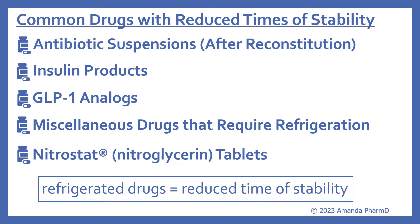Now we're going to look at some common drugs with reduced times of stability. This includes antibiotic suspensions after reconstitution, insulin products, GLP-1 analogs, some miscellaneous drugs that require refrigeration, and Nitrostat or nitroglycerin tablets. Generally, with refrigerated drugs, they're going to have a reduced time of stability once they're opened or once they are brought to room temperature.